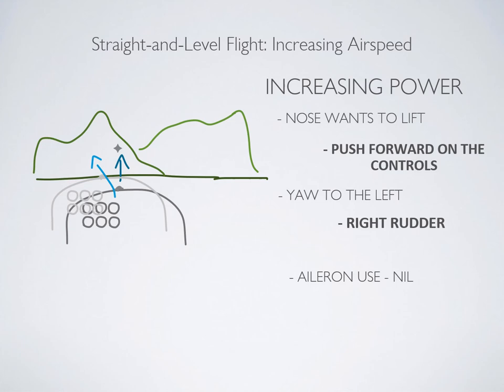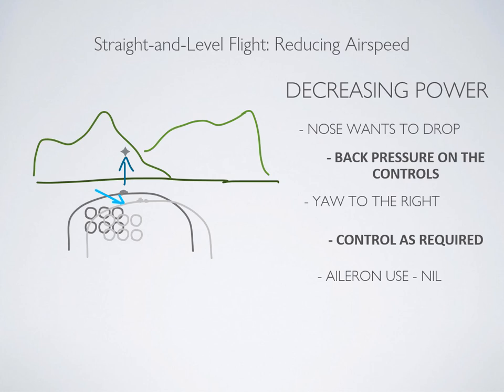So for a quick review - from straight and level flight, if you want to increase airspeed, first you're going to increase power. The nose is going to want to lift so you push forward at the same time, and it's going to want to yaw to the left so you give it a bit of right rudder. Your ailerons aren't really going to do anything in this situation. When reducing airspeed, you bring the power back, the nose is going to want to drop so you apply back pressure on the control, and it's also going to want to yaw to the right. It won't be as intense a yaw as when you add power, and you'll see this when you go for your flight.